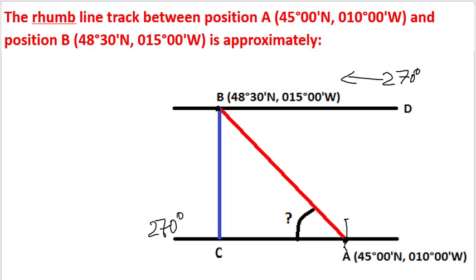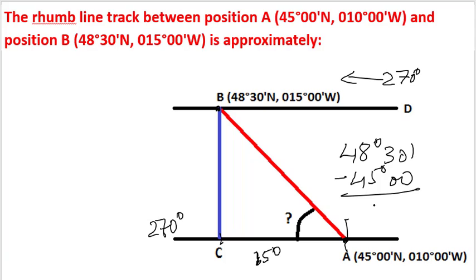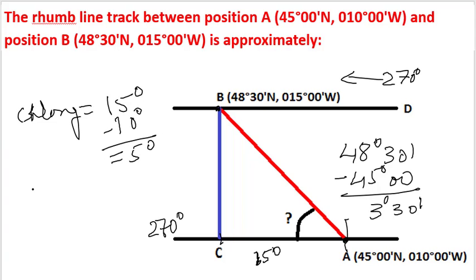The difference in longitude between A and C is 5 degrees — that is, 10 degrees west to 15 degrees west. The latitude difference is 3 degrees 30 minutes: 48 degrees 30 minutes minus 45 degrees gives 3 degrees 30 minutes. So ChLong equals 15 minus 10, which is 5 degrees, and ChLat equals 3 degrees 30 minutes.